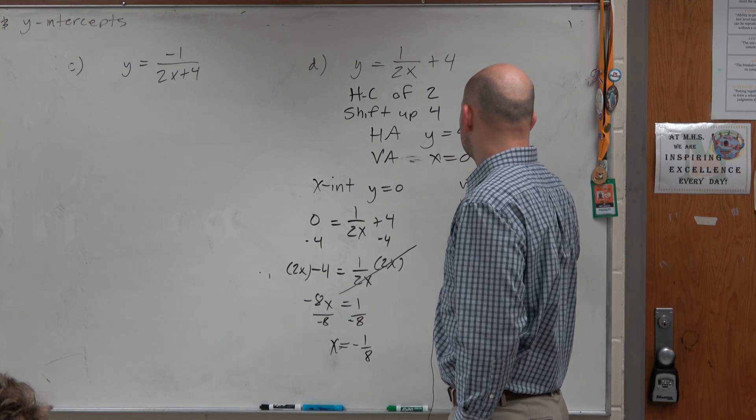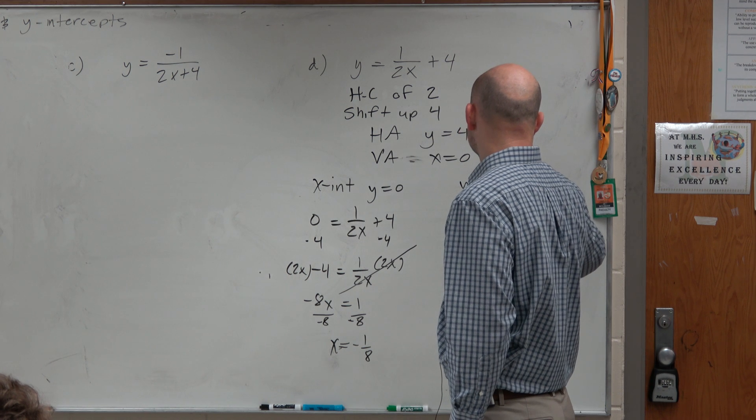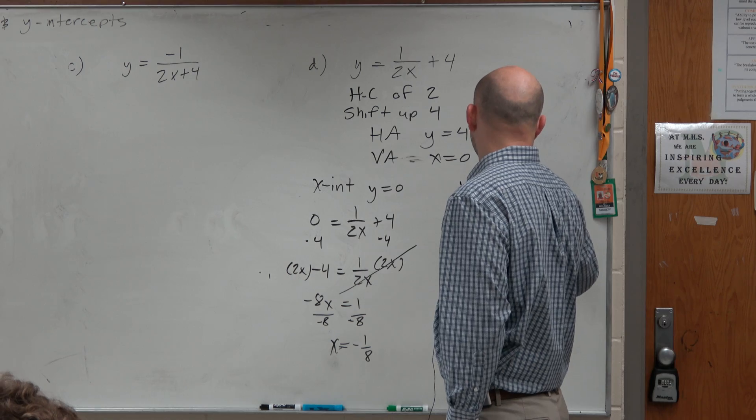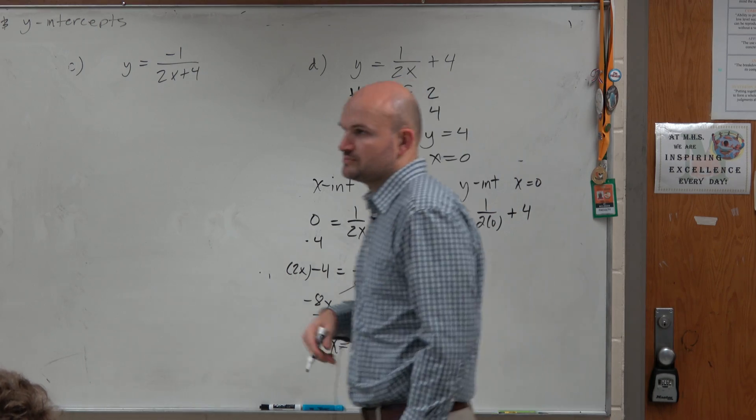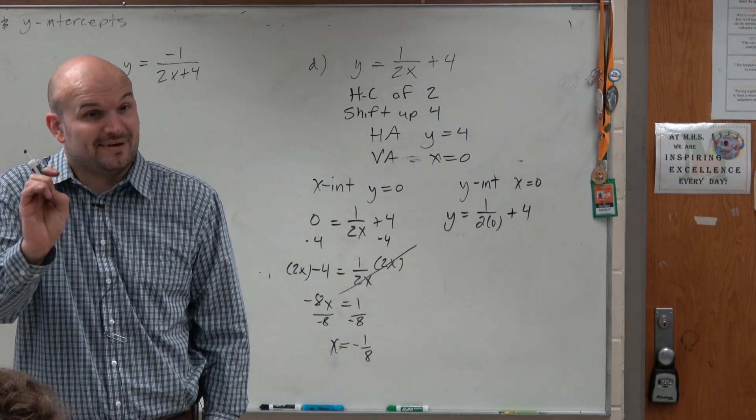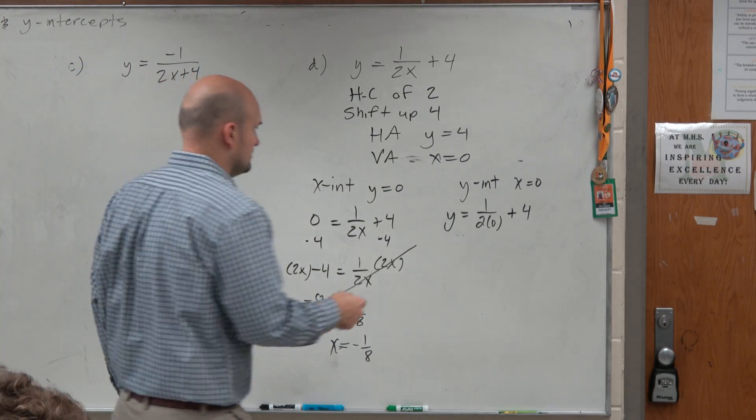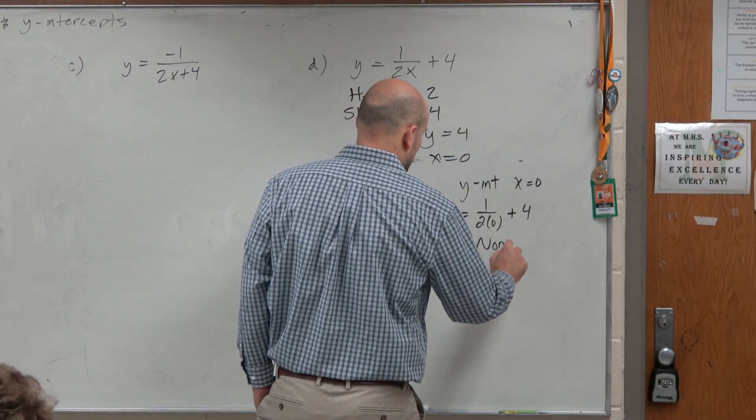Now, the y-intercept is when x is equal to 0. So I'm going to plug 0 in for x, and I see that there is an issue. Because when I plug 0 in for x, that makes the denominator 0. And we know we can't have 0 as the denominator.